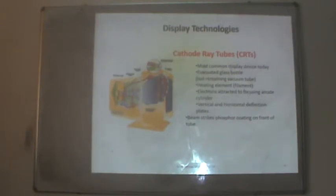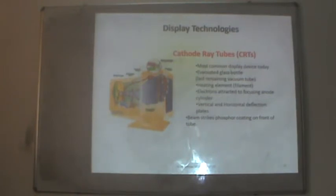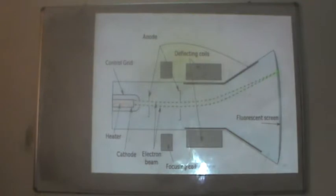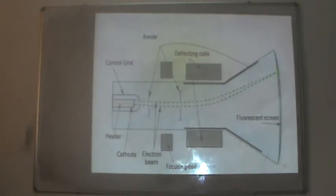This diagram shows a CRT with an evacuated glass bottle, a heating element, and an electron beam striking the screen. Vertical and horizontal deflection plates are visible. The beam strikes the phosphor coating on the front of the tube. When the heating coil is heated, it generates electrons, which strike the phosphor stream, thereby generating heat and light.